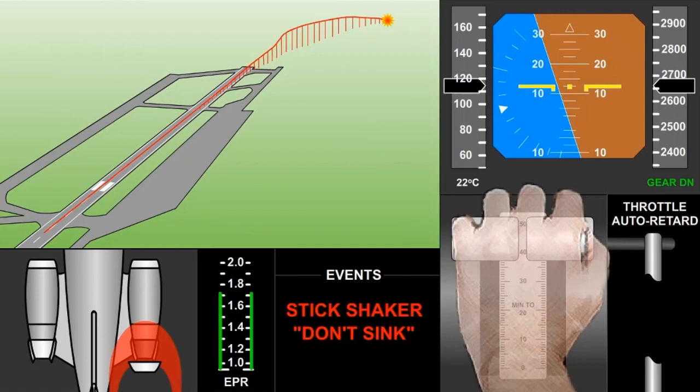The reverser fully opened while the engine accelerated to takeoff thrust. This high reverse thrust condition caused an airplane deceleration that resulted in a stall and loss of control.